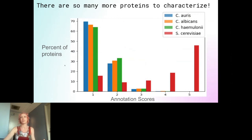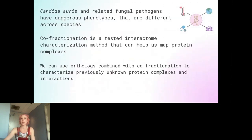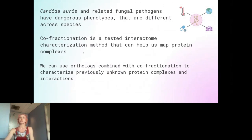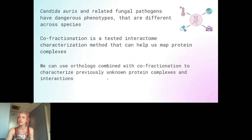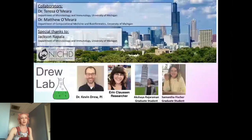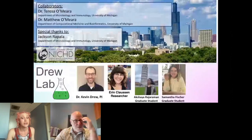In summary: Candida auris and related fungal pathogens have dangerous phenotypes that differ across species. Co-fractionation is a tested interactome characterization method that can help us map protein complexes. We can use orthologs combined with co-fractionation to characterize previously unknown protein complexes and interactions. Thank you to my lab and thank you for having me. Are there any questions?